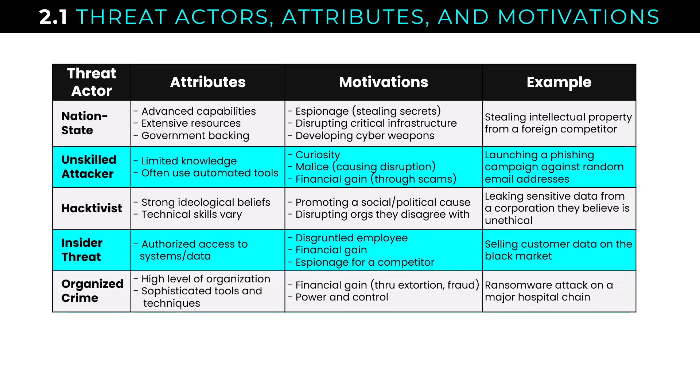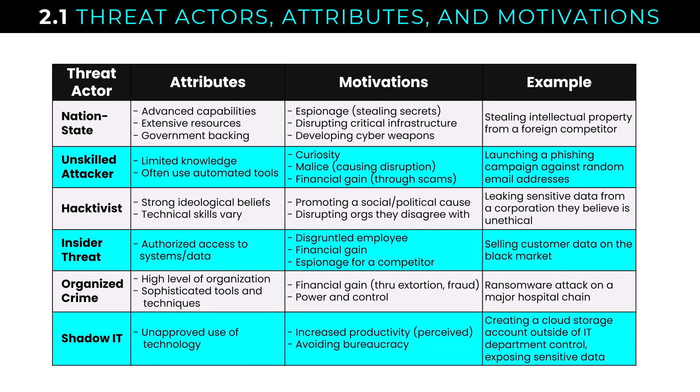Organized crime might launch a ransomware attack on a major hospital chain — these organizations are sophisticated, they know the ROI on ransomware attacks, do the math, and pick their targets carefully. Shadow IT could be someone in sales creating a cloud storage account outside IT control to more conveniently share files, or a developer spinning up an AWS or Azure subscription to get VMs more quickly. Employees engaging in shadow IT are focused on increased productivity and avoiding the red tape of procuring new resources.